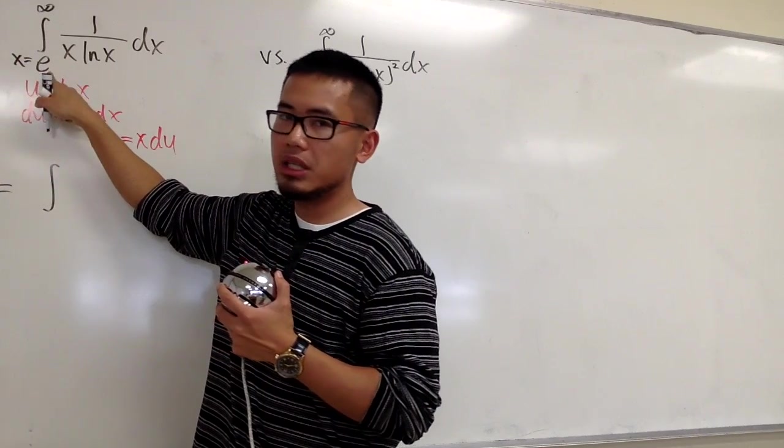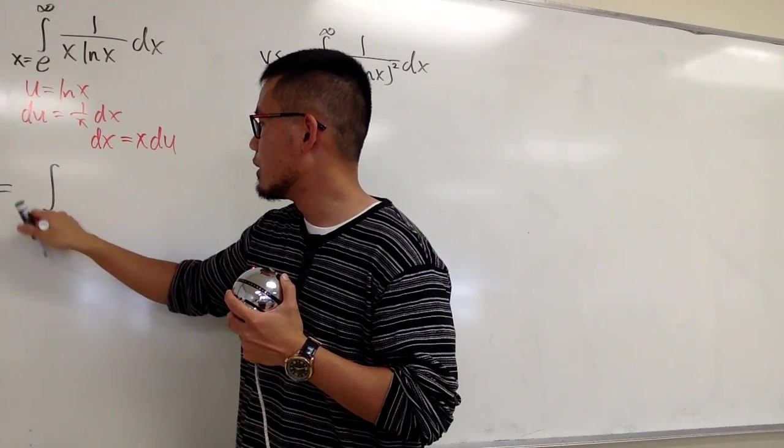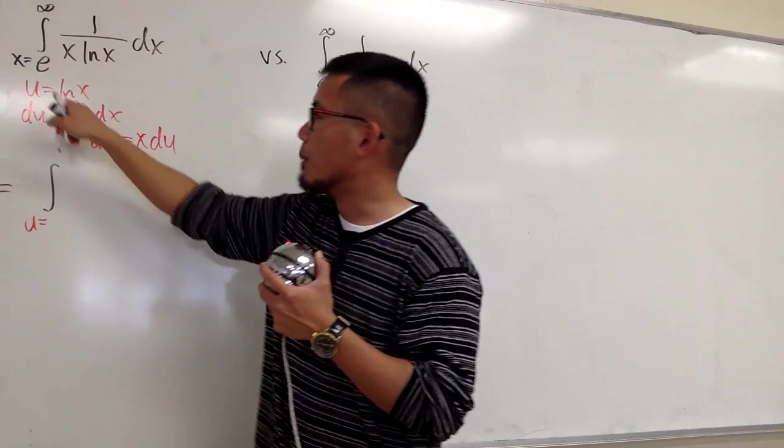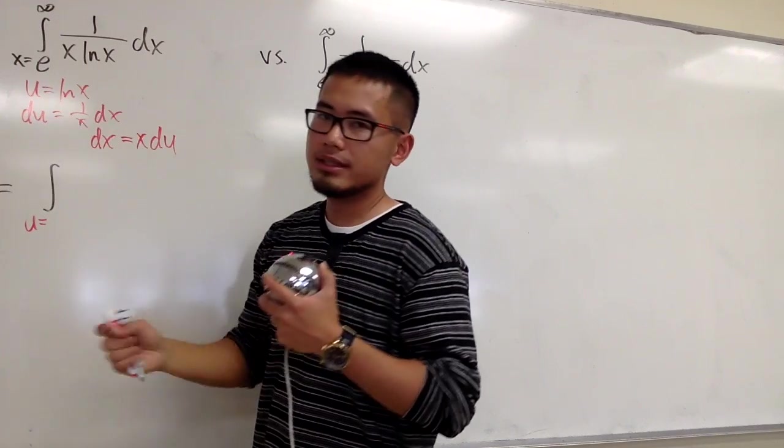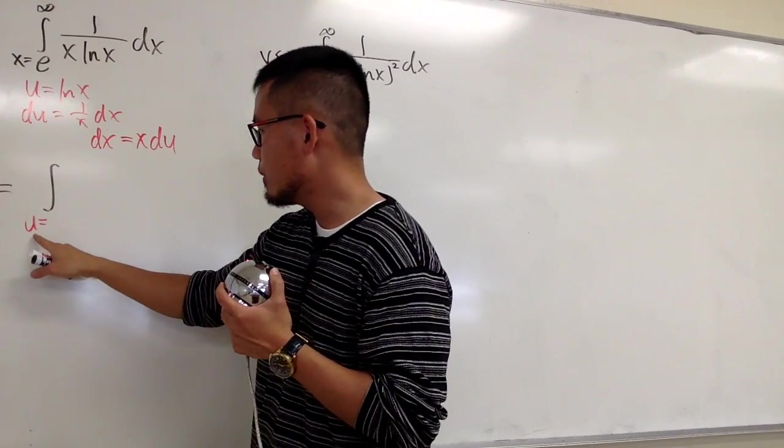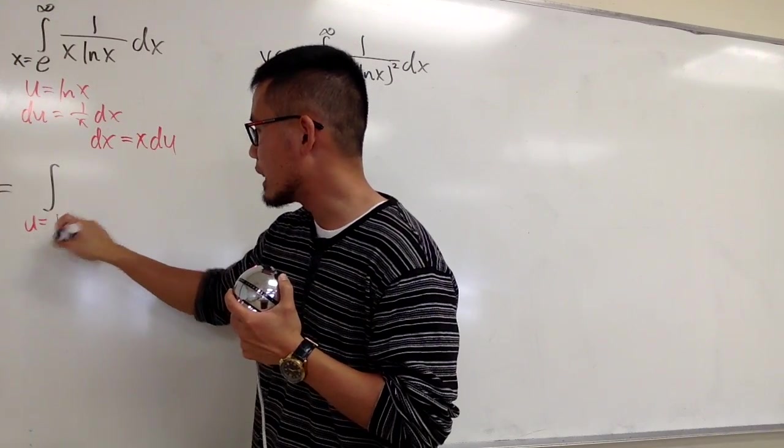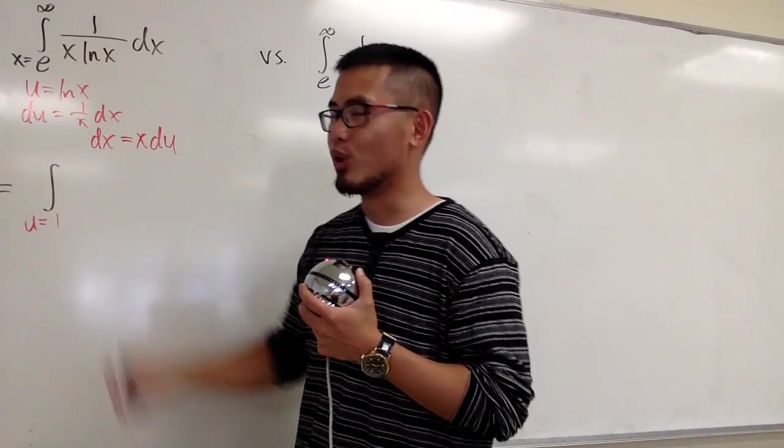x is equal to e. I want to change that to u. In that case, I will plug in e into x. ln(e) is equal to 1. So this will be u is equal to 1. It's a different starting value in the u world.